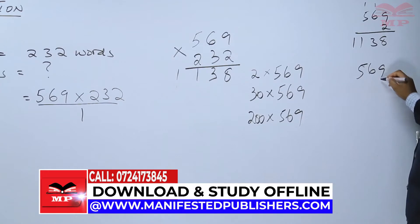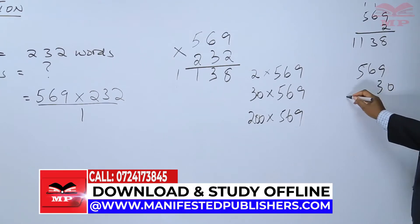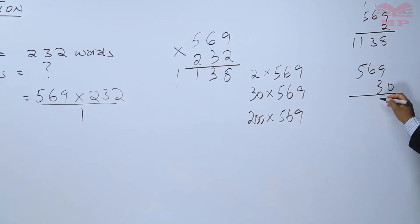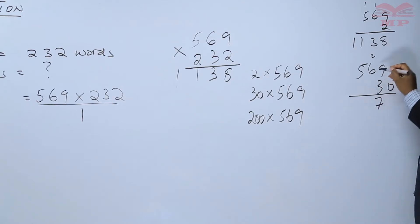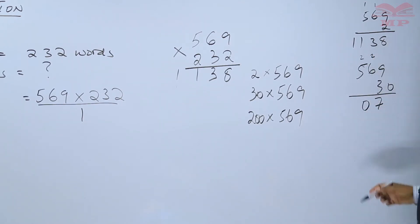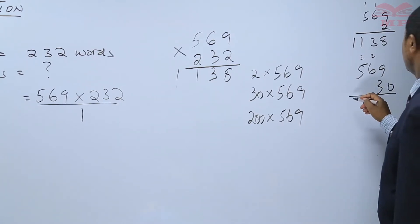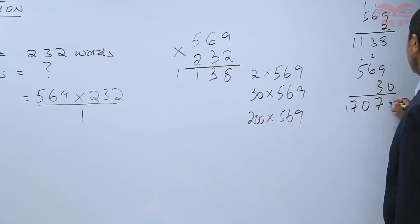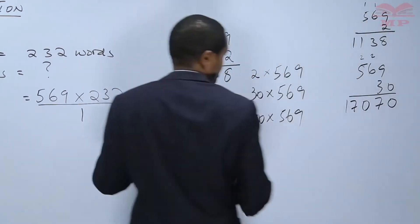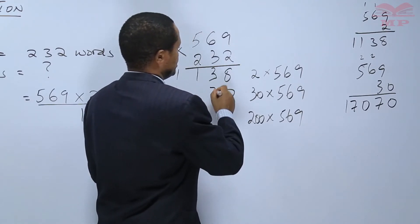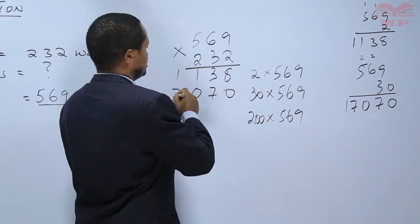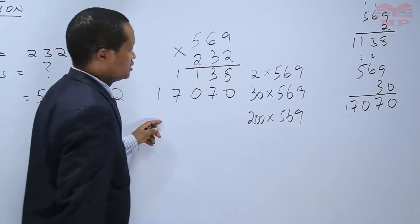569 times 30: 9 times 3 is 27, write 7, carry 2. 6 times 3 is 18 plus 2, which is 20, write 0, carry 2. 5 times 3 is 15 plus 2, which is 17. There is a 0 placeholder, so we write: 0, 7, 0, 7, 1, 7, 1.